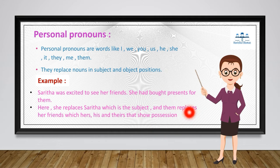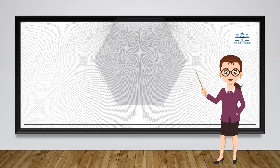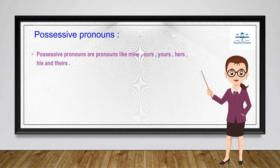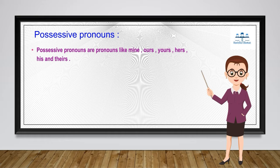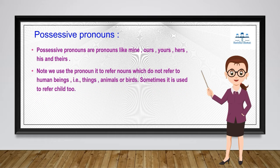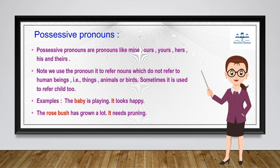Now let us see about possessive pronouns. Possessive pronouns show ownership. They are pronouns like mine, ours, yours, hers, his, and theirs. Note: we use the pronoun 'it' to refer to nouns which do not refer to human beings — like things, animals, birds, or sometimes even a child. For example: 'The baby is playing. It looks happy.' Here 'it' replaces 'the baby'. Also, 'The rose bush has grown a lot. It needs pruning.' Here 'it' replaces 'the rose bush'. Examples of possessive pronouns: 'This pen is mine', 'The bag is yours'.